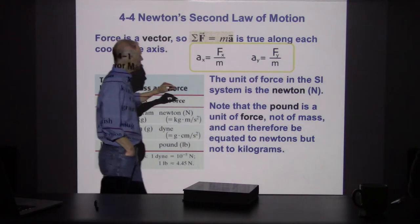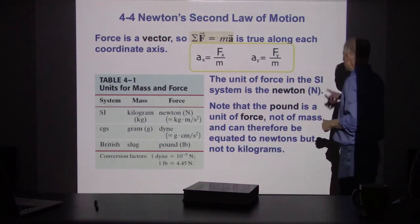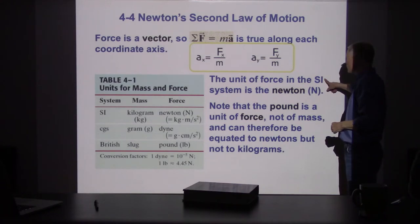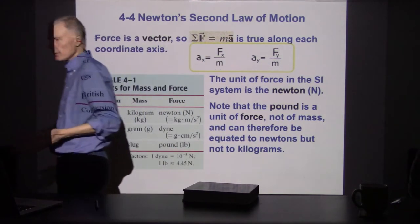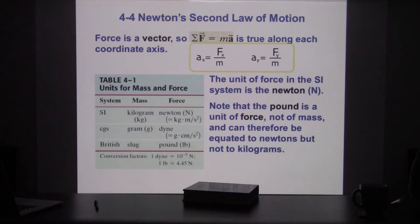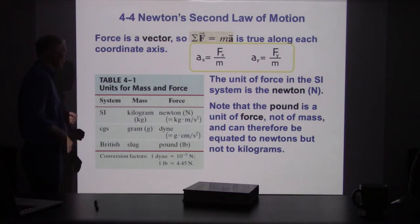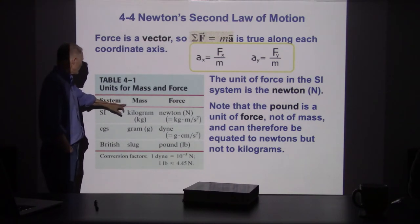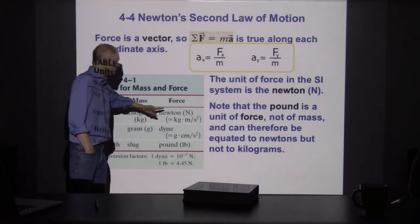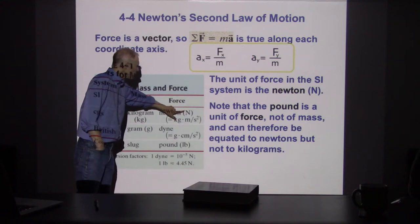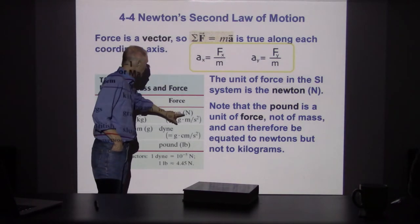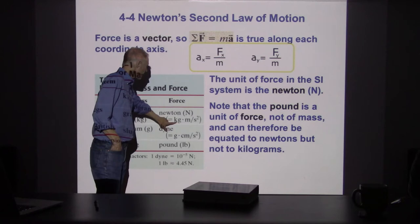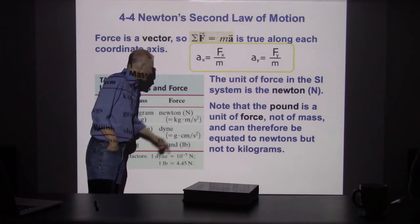The unit we use for force in the international system is called the Newton, capital N. A Newton is made up of kilograms times meters divided by seconds squared — kg·m/s². So when we divide a force in Newtons by mass in kilograms, we get acceleration in meters per second squared. That's how the units are related.